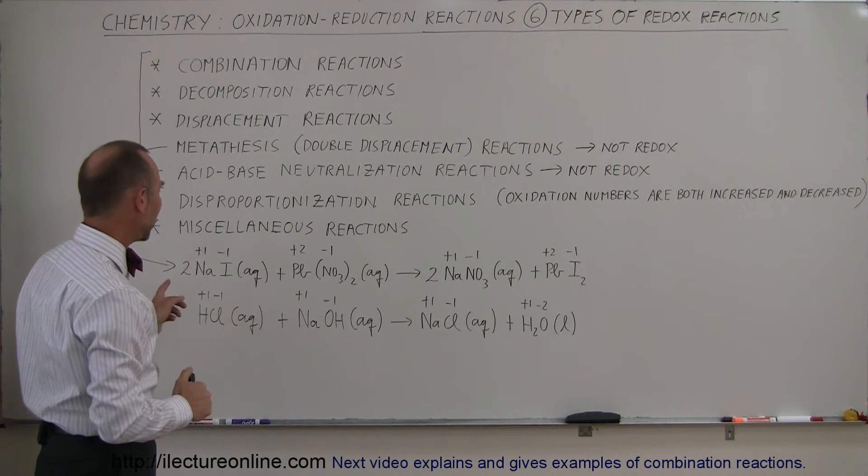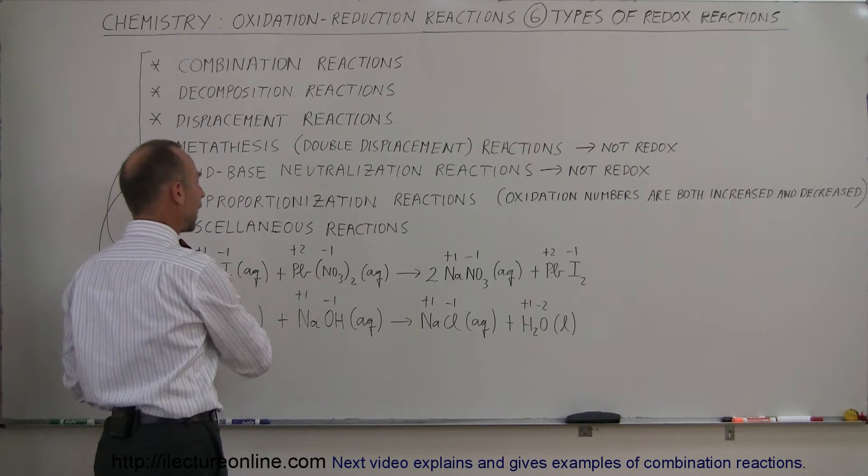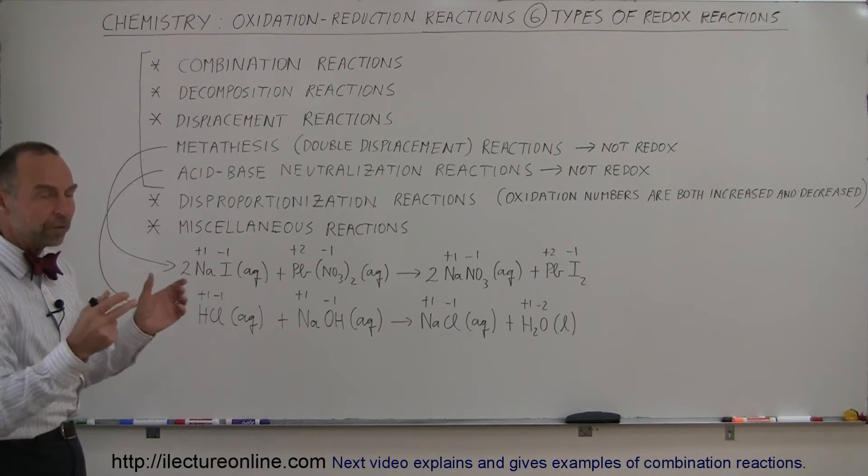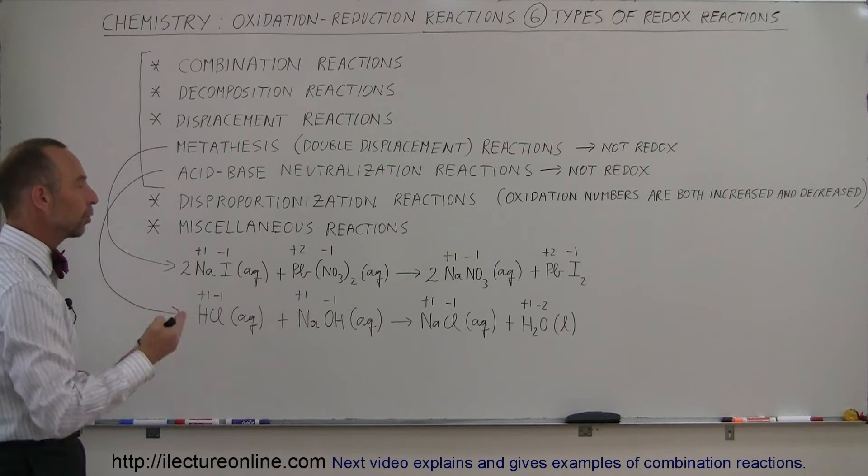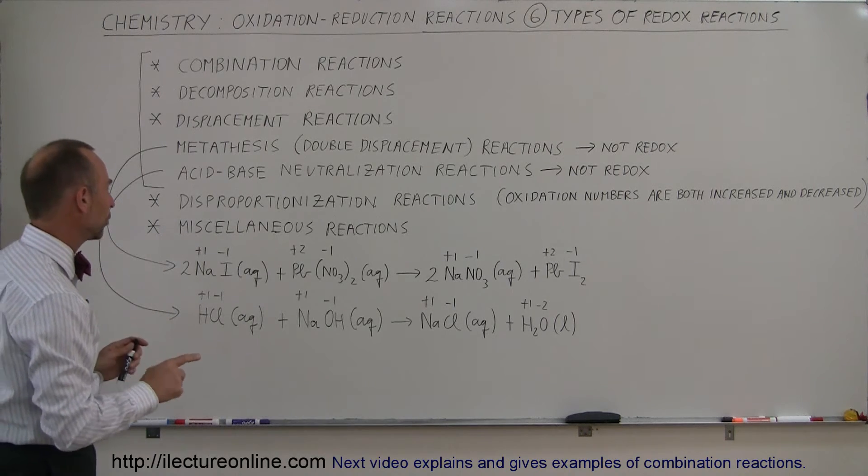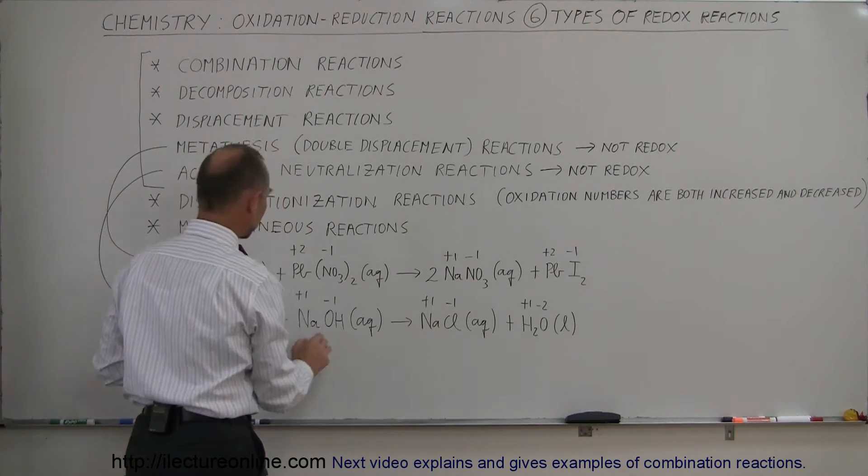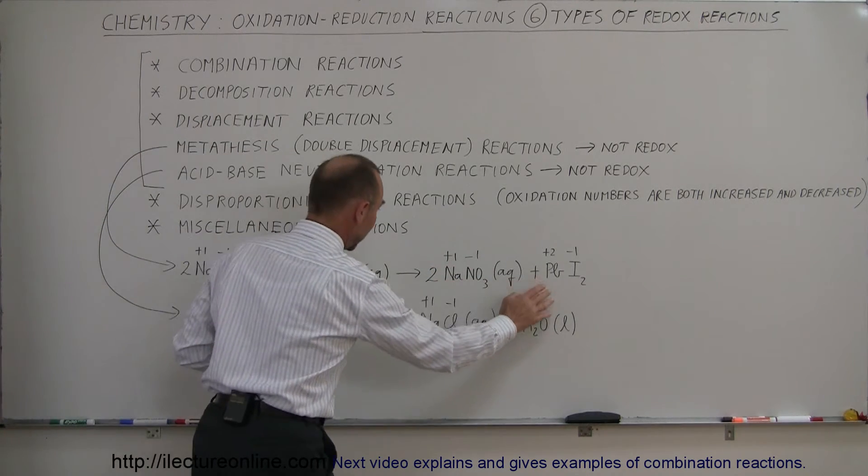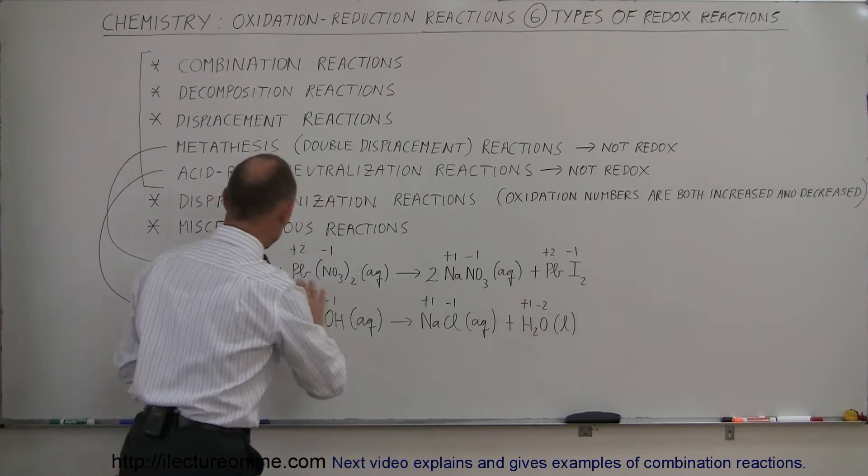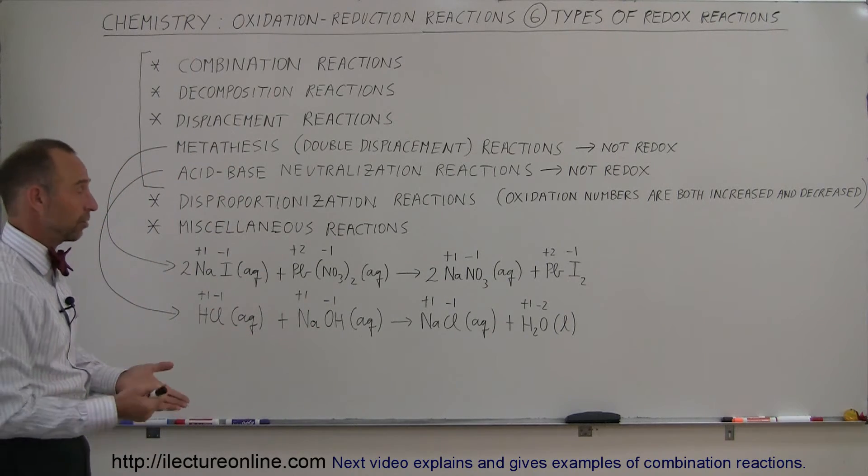In the reaction, what will happen is the sodium will combine with the nitrate, and the lead will combine with iodine. That's what we call double displacement. Two elements are being switched around, and because of that, the oxidation numbers do not have to change. Sodium still is plus one, and the nitrate ion is still minus one. The lead ion is still plus two, and the iodine ion is still minus one. That's why you need two of them. But notice that nothing has changed as far as the oxidation number is concerned. Therefore, that's not a redox reaction, not an oxidation reduction reaction.